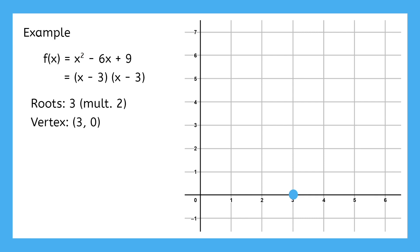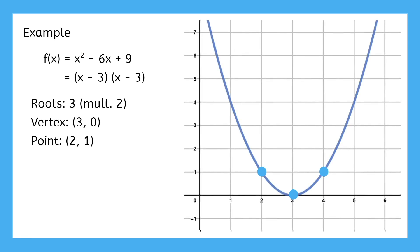We can't graph this with only one point, so pick a random input to evaluate, plot the resulting point, and remember that parabolas are symmetrical. So we can also plot a point on the other side of that vertex. Now we have three points and we can draw the curve through them.